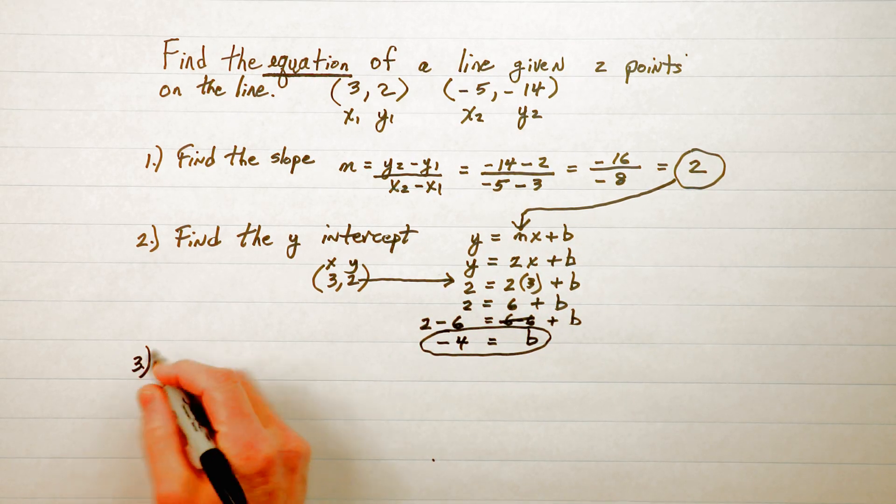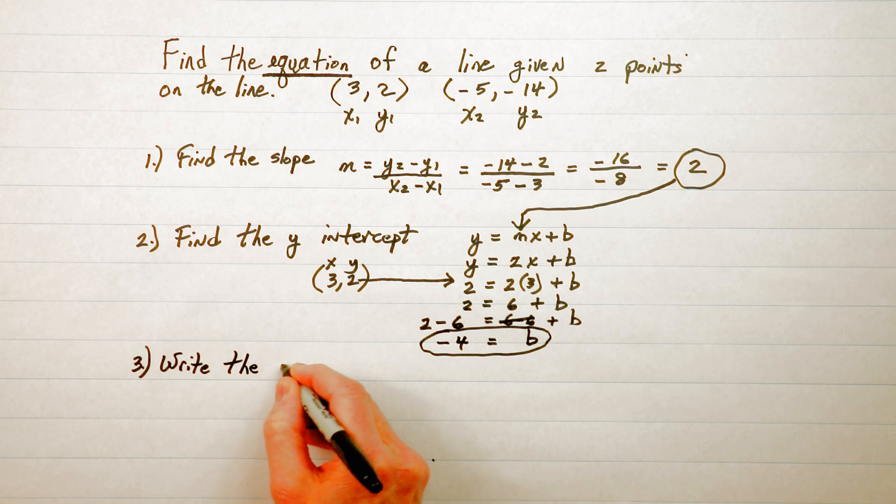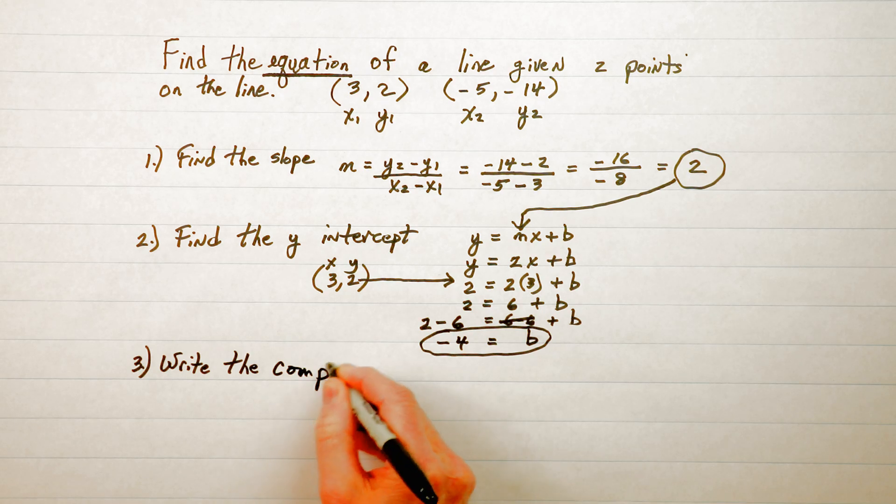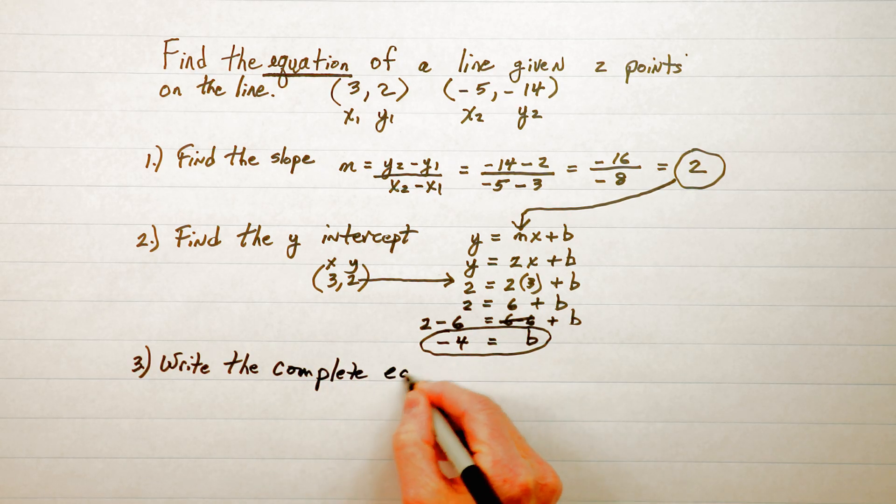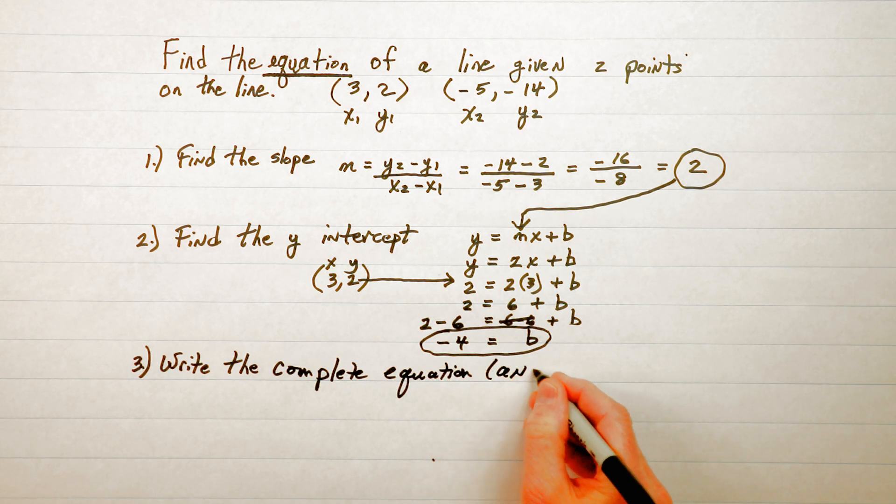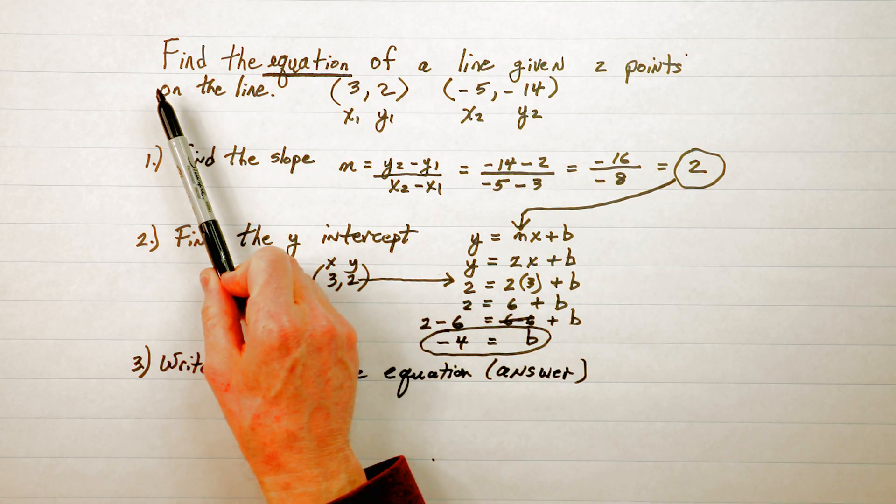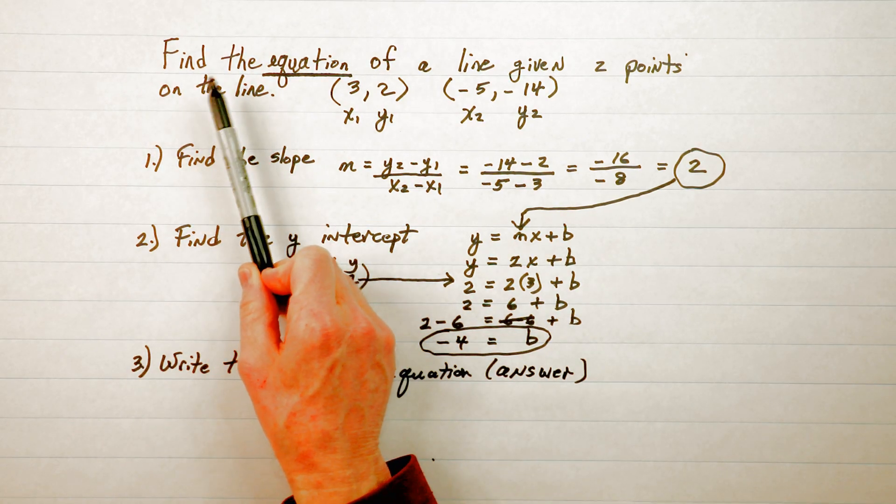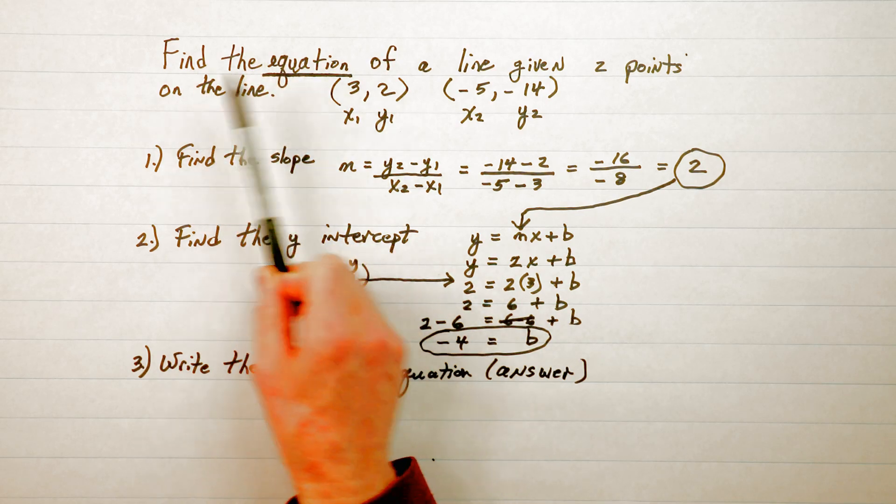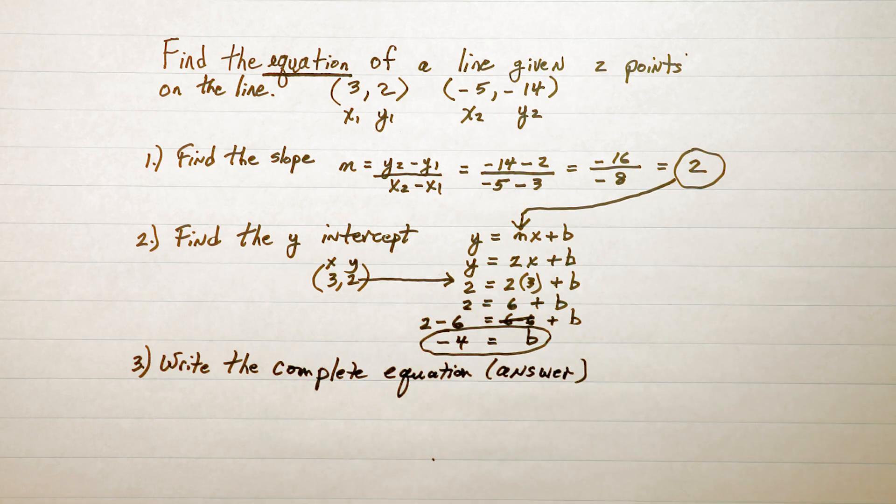Our third step is to write the complete equation or we write the answer. Now often when I'm doing math I look back at the question that I'm given just to make sure that I'm doing what I'm supposed to be doing. It says find the equation of a line.